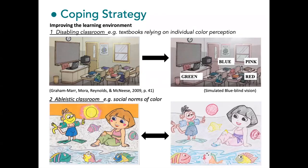First, I found some English textbooks which heavily rely on individual color perception. As a coping strategy, I started to write colors. Second, I found there might be an ableistic notion of color, which means teachers tend not to be skeptical about their color terms. As a coping strategy, I tried to raise awareness of differences of color norms between cultures.